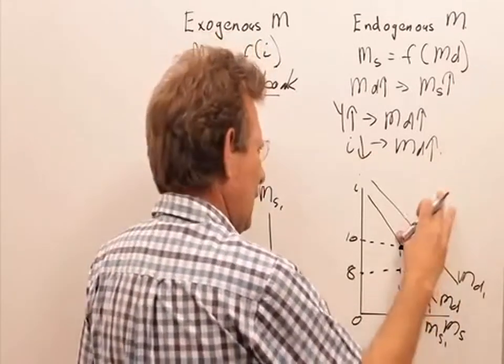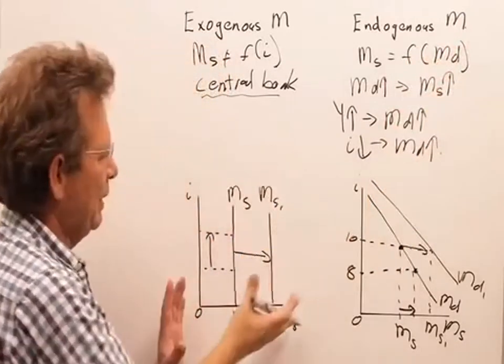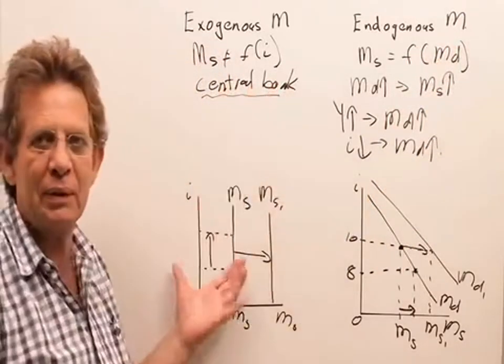So in this case, money is determined by the demand for it. It's demand determined. In this case, it's independent, and it's determined by the central bank.